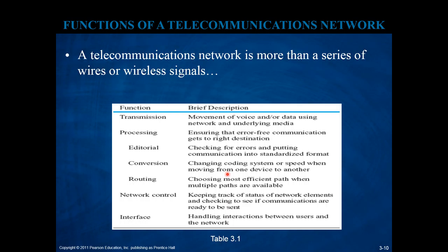Processing may also involve conversion, which means changing the coding system or speed when moving from one device to another, because some networks involve devices built using different technologies that communicate using different protocols — so communication typically needs to be translated. There is also a subtask of routing, which means choosing the most efficient path when multiple paths are available for sending a signal from one node to another.